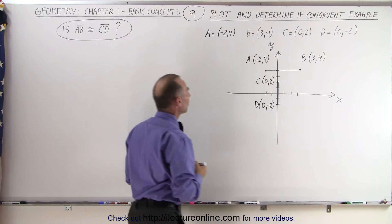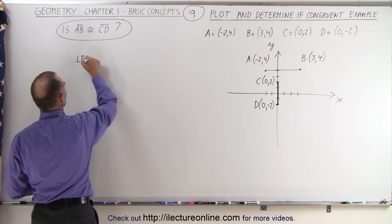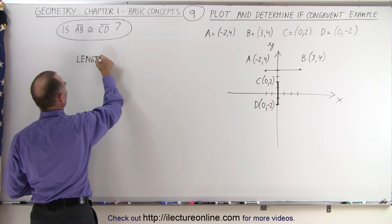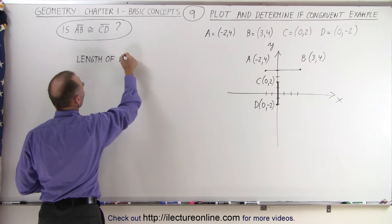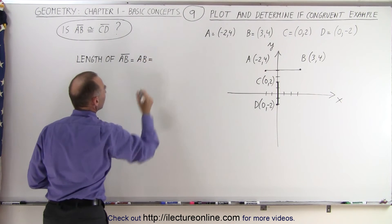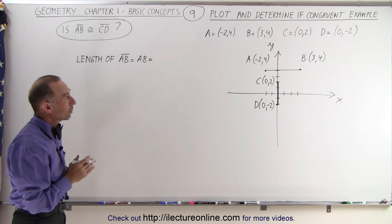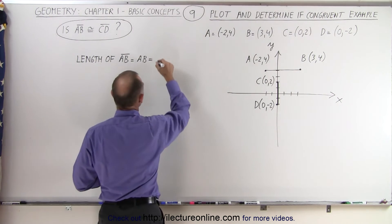The y-coordinate stays the same, so we can say that the length of line segment AB can be determined by taking the distance between those two points, which is simply the absolute value of the difference of the two x-coordinates.